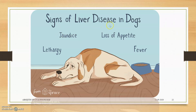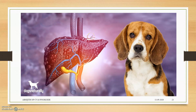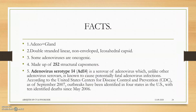In this disease, the liver is enlarged and the small intestine shows edema as the main problem. Signs of liver disease include jaundice, lethargy, loss of appetite, fever, blood clotting disorders, vomiting, and ascites. As an additional fact, the adenovirus capsid is made up of 252 structural capsomeres — this figure of 252 has been asked many times in ICAR exams and many public service commission exams.